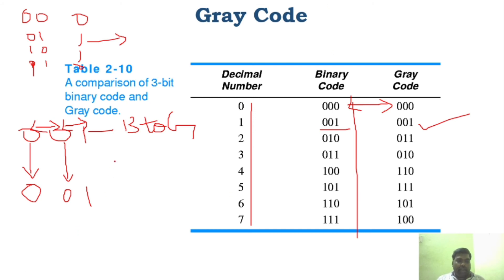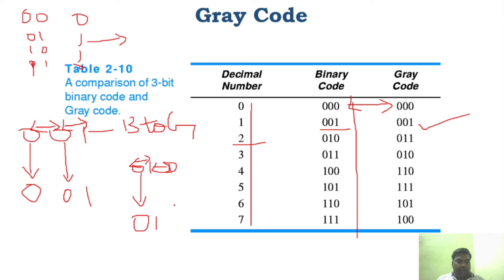Now for binary 2, which is 010: the MSB stays the same (0). For the second bit, I XOR the first and second bits: 0 XOR 1 = 1. For the third bit, I XOR the second and third bits: 1 XOR 0 = 1. So the grey code for 010 is 011.